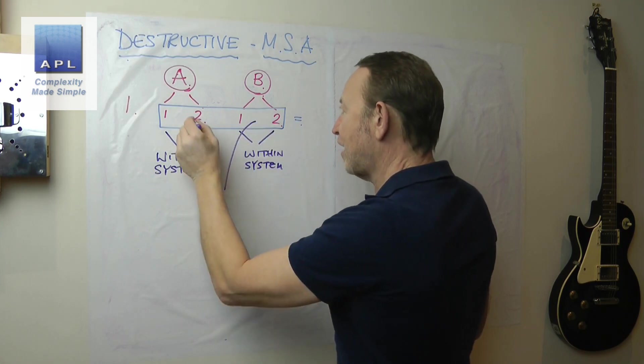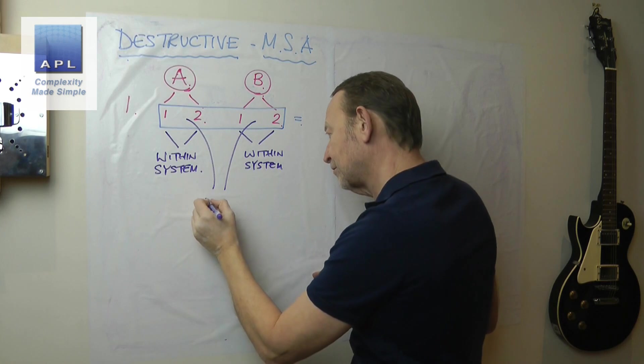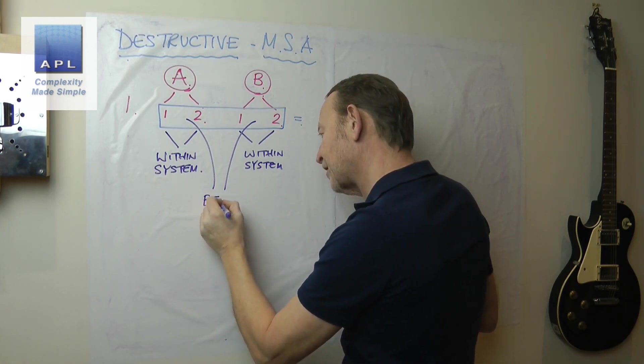But if the average of A and the average of B are wrong or different, that is between system.